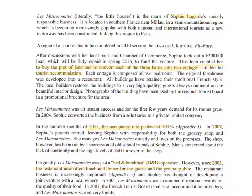They have a restaurant which originally was only for the B&B guests staying at the accommodation, but since 2003 they've opened it up to the general public for lunch and dinner. In 2007, Sophie's parents retired, leaving Sophie with responsibility for both the shop they originally owned and this new venture.